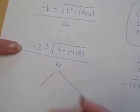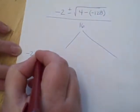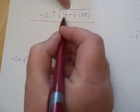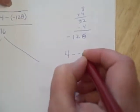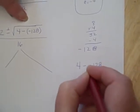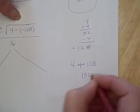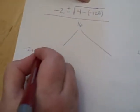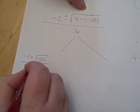So basically, you have to do a plus here and you have to do a minus here. So you're going to get two values. You've got negative 2 plus the square root. Well, what is 4 minus negative 128? Let's go over here again. 4 minus a negative 128 is the same as 4 plus 128, which is 132. So you want the square root of 132, and all of that divided by 16.